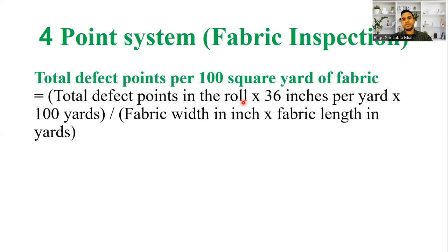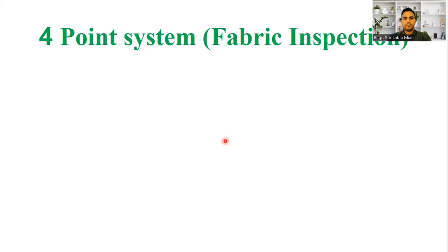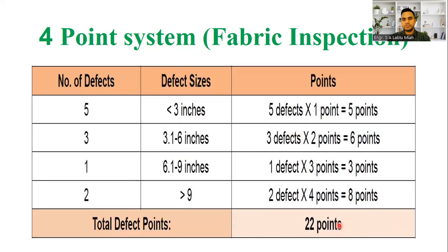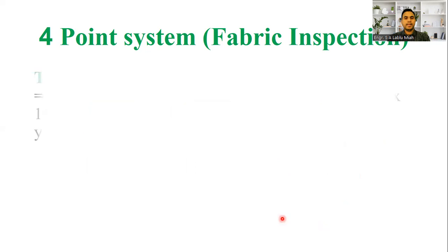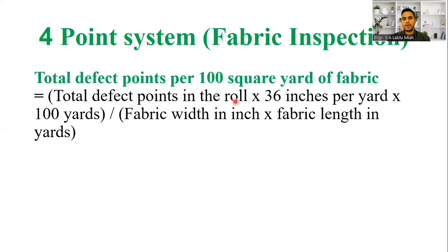This roll is checked for defect points. If you see the defect point in the roll, we record it. The total defect point in this roll is 22, and the roll is 36 inches wide per yard.